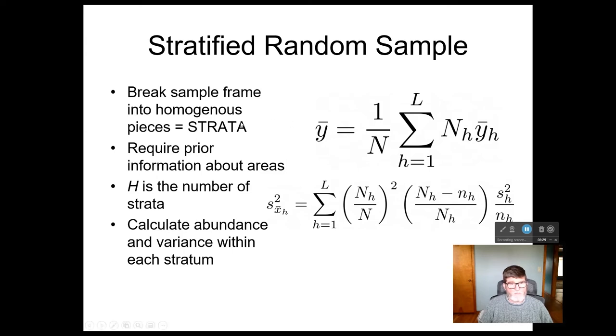So a stratified random sample, essentially what we do is we take the sample frame, that group of sample units, that's everything that we're going to sample from, and we break it into pieces that we think are relatively homogenous compared to the entire sample frame. We call those strata. A single one is a stratum. Obviously, this requires some prior knowledge about those areas because you need some variable that's going to tell you what is correlated with the thing that we're interested in.